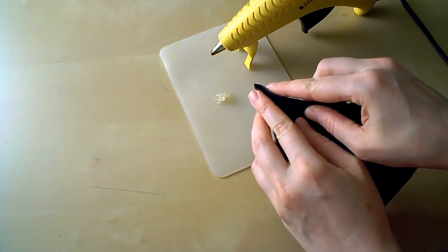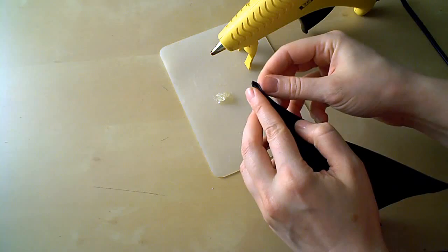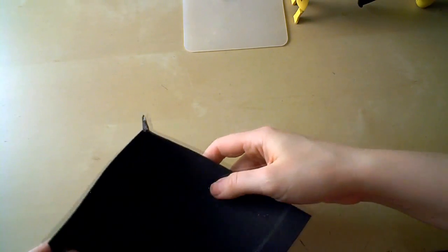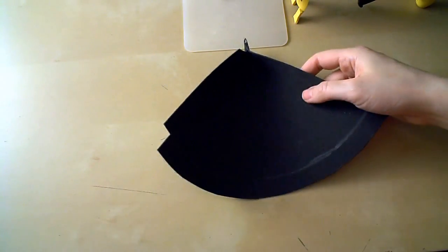Then pinch the two edges back together, doing your best not to squish a bunch of glue out because it will burn you and also because it will look ugly. Hold the edges together for a minute or so until the glue cools. This is what it should look like when the glue has set.